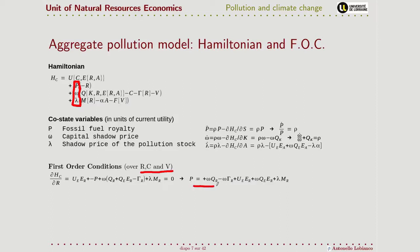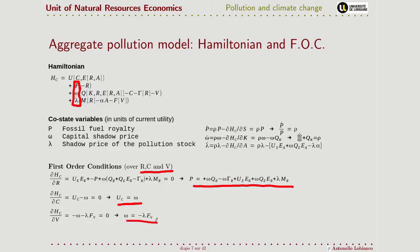We set that first derivative equal to zero and obtain equations we will interpret later. When we do the same for consumption, we get what we have already seen many times: the marginal utility of consumption must be equal to the shadow price of capital. When we do it for the level of cleanup expenditure, we obtain equations we will interpret shortly.